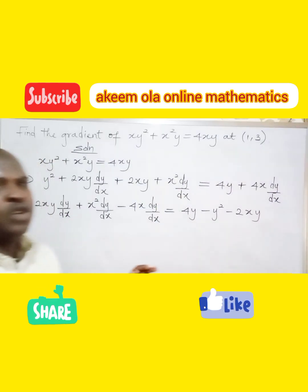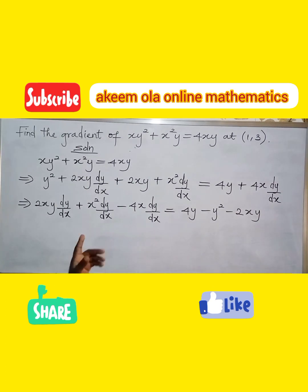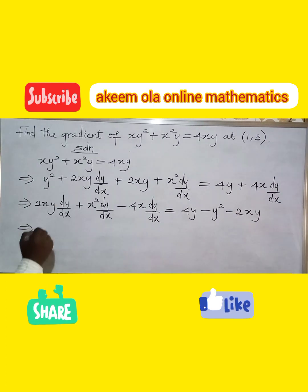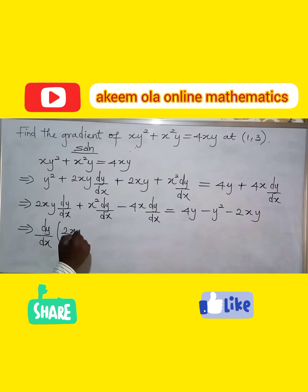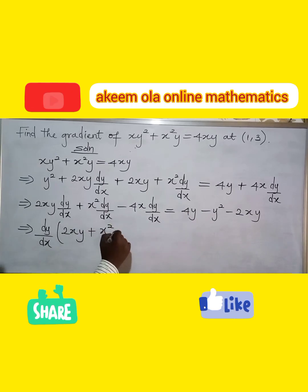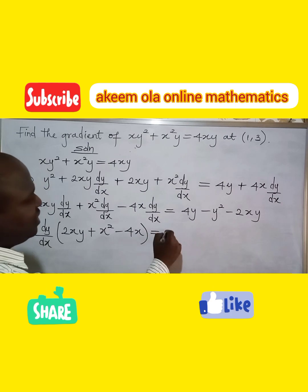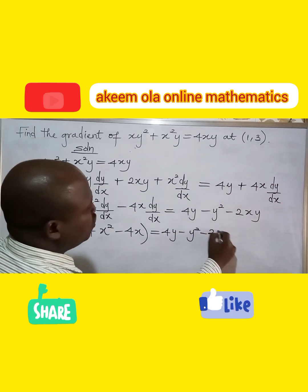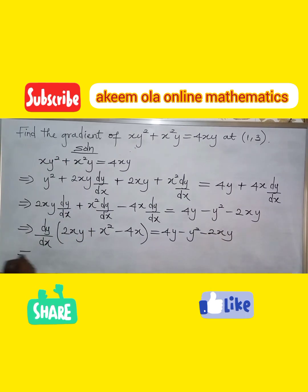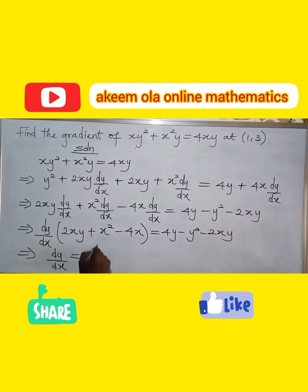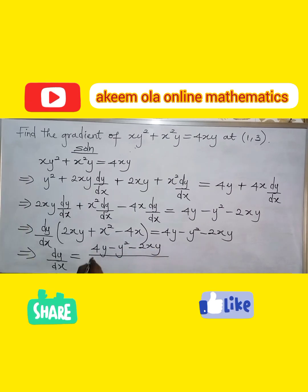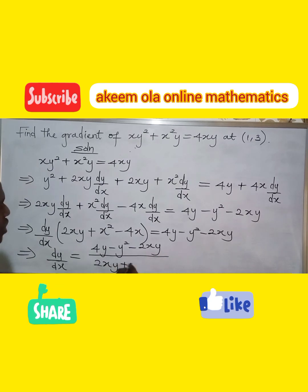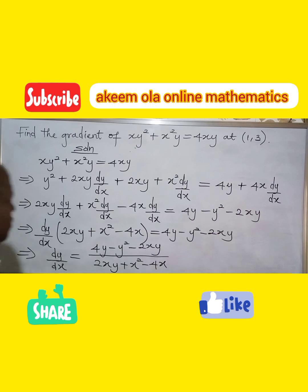dy/dx is common to all three terms on the left, so we factor it out. That gives dy/dx times (2xy plus x squared minus 4x) equals 4y minus y squared minus 2xy. Therefore, dy/dx equals (4y minus y squared minus 2xy) all over (2xy plus x squared minus 4x).